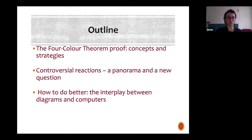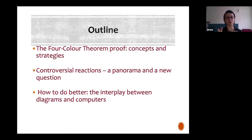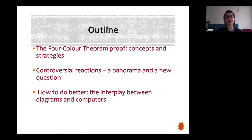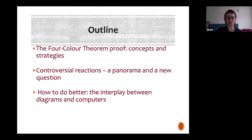In the first section, I'll tell you a little about the proof so we can know the concepts involved and the main strategies. Then I'll briefly discuss the controversial reactions within the mathematical community and amongst philosophers. And then the new question — which is the question about the identity of three versions of the proof and how I am tackling the problem now. It's really work in progress. This change in perspective happened not in one year but roughly in the middle of the pandemic.